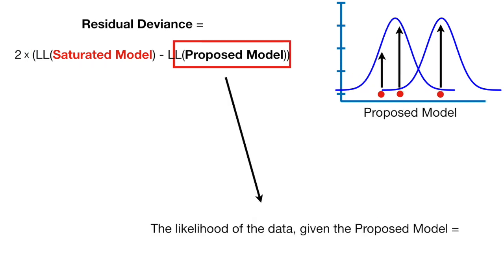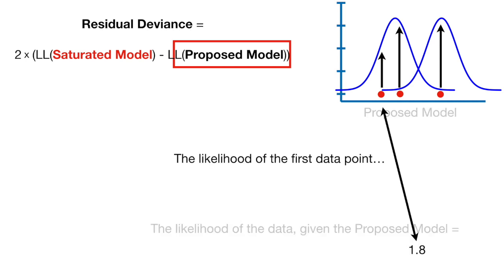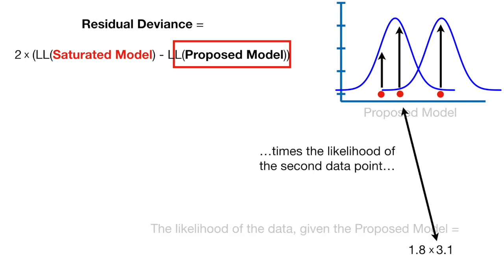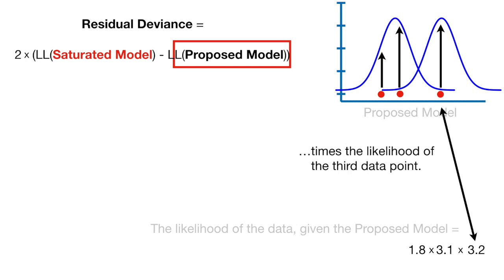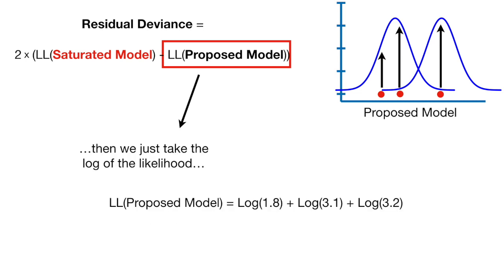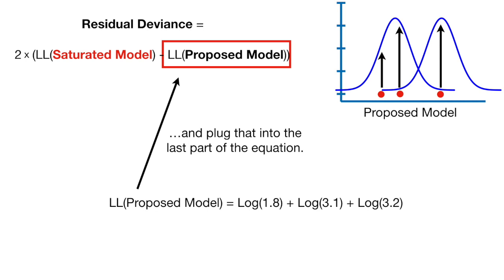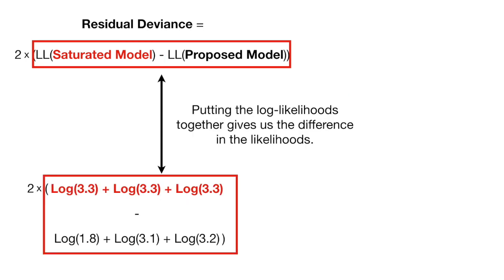The likelihood of the data given the proposed model equals the likelihood of the first data point times the likelihood of the second data point times the likelihood of the third data point. Then we just take the log of the likelihood and plug that into the last part of the equation. Putting the log likelihoods together gives us the difference in the likelihoods.